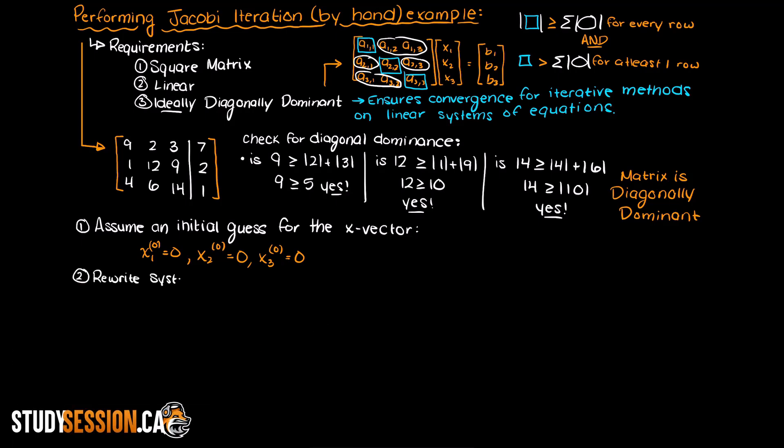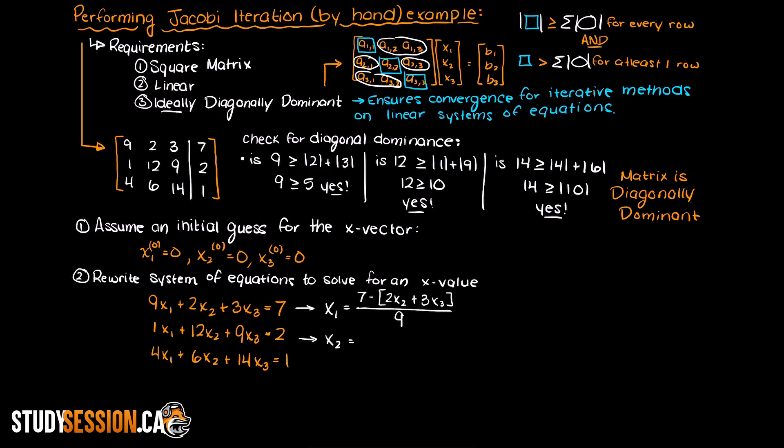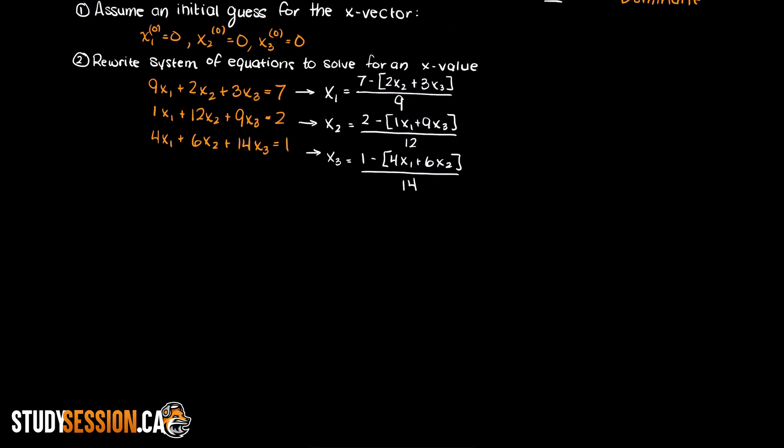Now step two, we must rewrite all of our independent equations in terms of one x value. So the easiest way to understand this if you are a bit confused is to actually write out the equations like so and then solve for the x value. Now as you can see here every one of our independent equations is now solving for one of our unknown x terms.